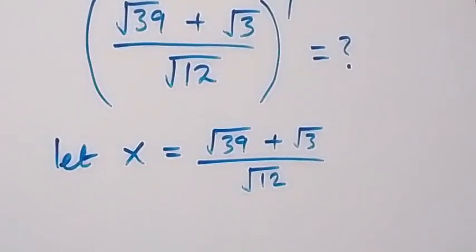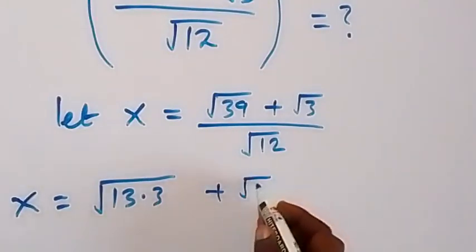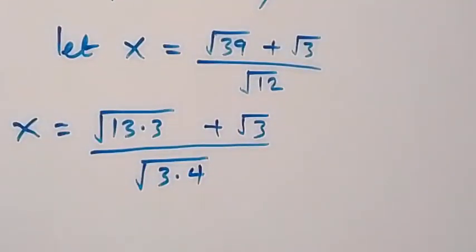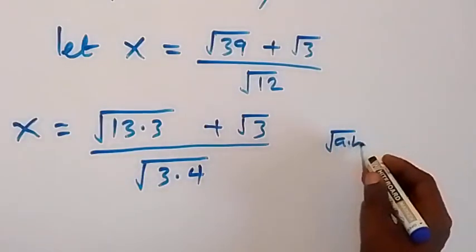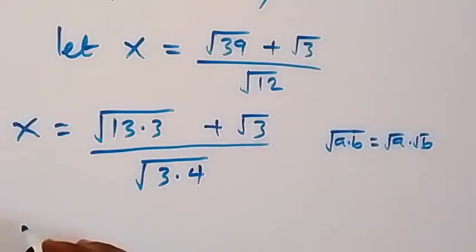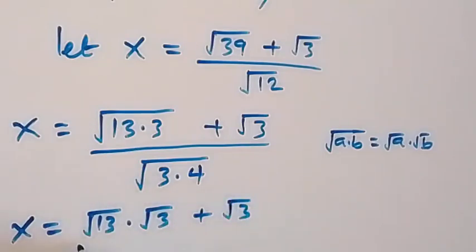We can write this as x equals √(13×3) + √3 over √(3×4). Since √(a×b) = √a × √b, we separate: x equals √13 × √3 plus √3, all over √3 times √4.